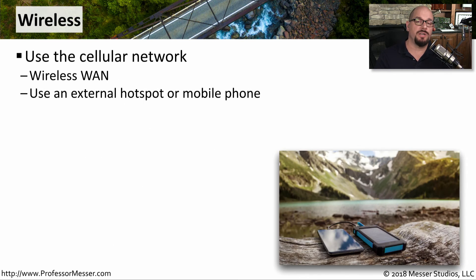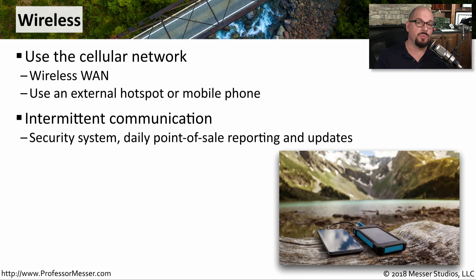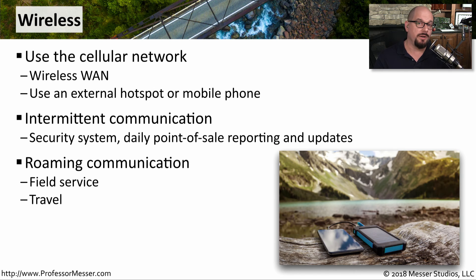There's also wide use of wireless wide area networks, being used over a mobile provider's network. We can now have our mobile phone or external hotspot provide wireless connectivity for all the devices we use every day. We commonly see these wireless WANs used for very specific purposes, such as security systems or point-of-sale reporting, but also for travel or field service operations where you don't have a way to plug in to a physical network connection.